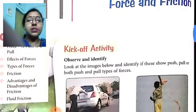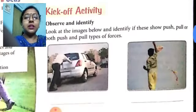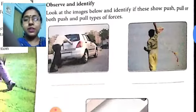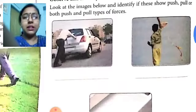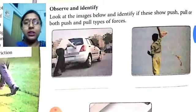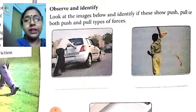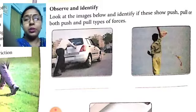An activity is given here. See the pictures: a man is pushing a car, a boy is flying a kite, and a drawer is being pulled to open it. These are examples of actions — pushing and pulling. In some cases, either a push takes place, or in another case, a pull takes place.